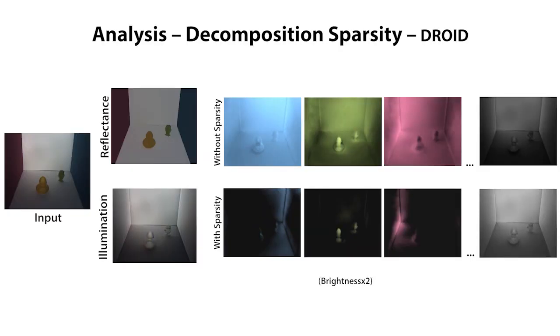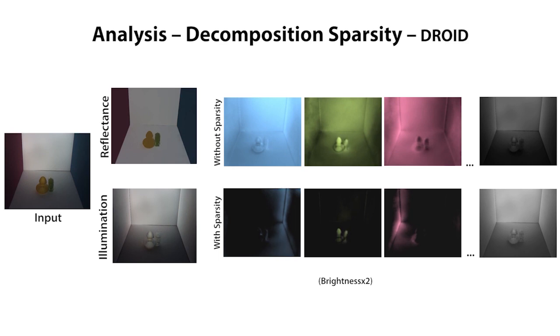We now present a thorough qualitative analysis of various components of our method. We show the results of the decomposition on the droid sequence with and without the decomposition sparsity prior. Without the sparsity, the indirect illumination layers are incorrectly flooded. The sparsity prior ensures that the inter-reflections are concentrated correctly near the source.